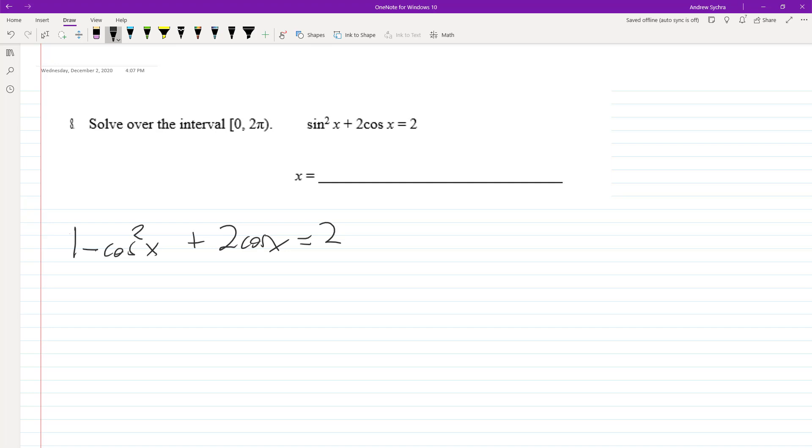So we move the 2 over, so we get negative 1 minus cosine squared x plus 2 cosine x equals 0. So then we can rewrite this.